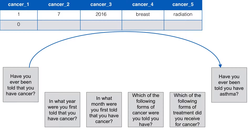Our second participant was never told that they have cancer, so they will have a value of 0 for the variable cancer1. But what value should we give them for the child questions? As you probably guessed, for the second participant, the value for the child cancer questions will be missing. We never ask the questions, so missing is the only value that logically makes sense.